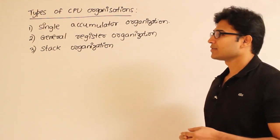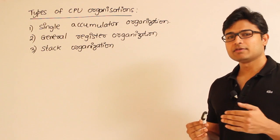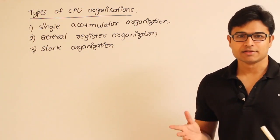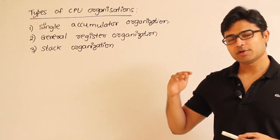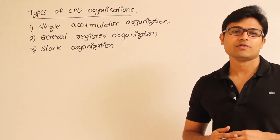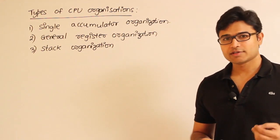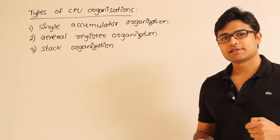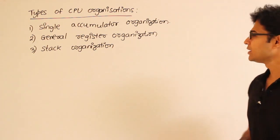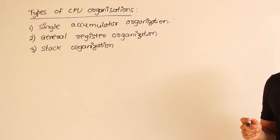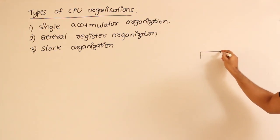Depending on the type of computer organization, our instructions will vary. For example, a computer might be designed in a simple way such that it will not have any registers at all other than the most basic registers required. We want to keep the cost of the CPU as minimal as possible. So in such computers where we don't have a lot of registers, we'll use one register along with operands from the memory.